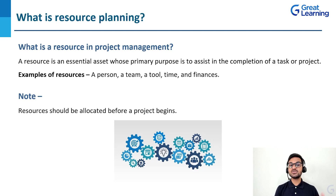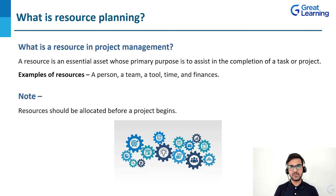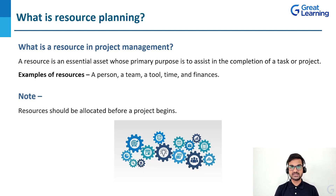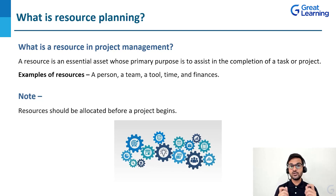Resources should be allocated before a project begins. Imagine that you have a project going on and in the middle of it, you realize that to do a particular task you need eight people but you actually have only six — that will be a mismatch. In order to make sure that we are going in a smooth direction, you have to allocate and estimate the resources before a project begins. If you do it in the middle, you may have to redo the entire work due to bad consequences. Always make sure you have proper estimation, forecasting, and allocation of resources for each and every task before the project starts.